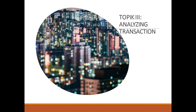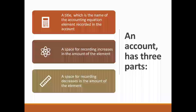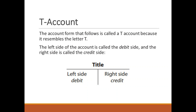And now we are learning to analyze transactions using and entering the account. An account in its simplest form has three parts: a title, which is the name of the accounting equation element recorded in the account; a space for recording increases in the amount of the element; and a space for recording decreases in the amount of the element. The account form that follows is called a T-account because it resembles the letter T. The left side of the account is called the debit side and the right side is called the credit side.